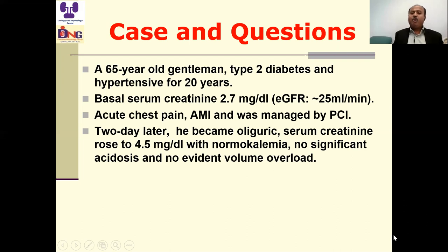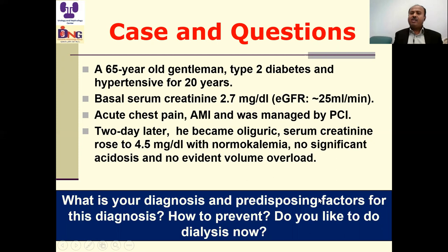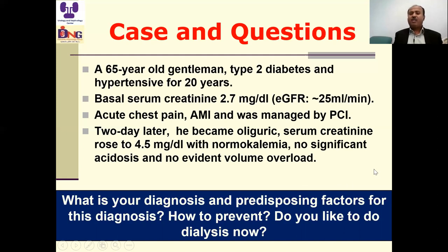Two days later, he became oliguric; serum creatinine rose from 2.7 to 4.5 mg/dL with normal serum potassium, no significant metabolic acidosis, and no evident volume overload by clinical examination. This is a case of acute kidney injury on top of chronic kidney disease — stage 4 CKD — so it is AKI superimposed on CKD. The questions are: what is the etiology? What are the risk factors? How to prevent them? I'm going to answer these questions at the end of this presentation.